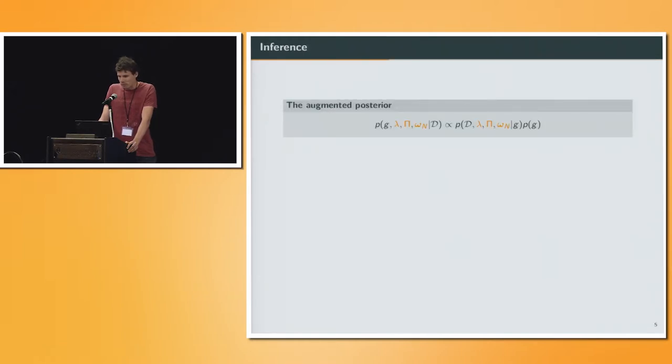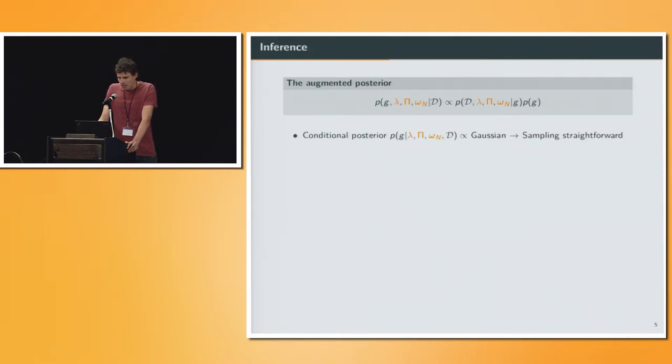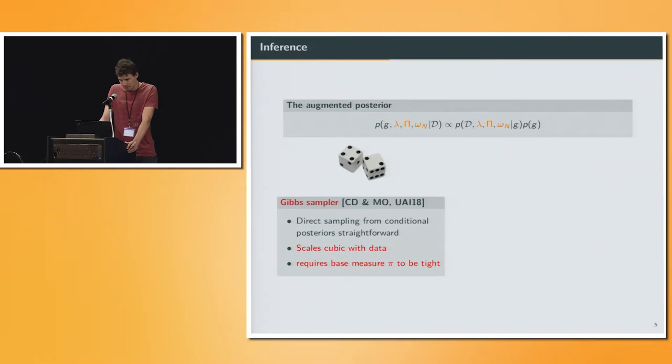Now we have our augmented posterior with our latent function g and our augmented variables here in orange. What we note now is that the conditional posterior of g, given the augmented variables and our data set is Gaussian, and sampling from this model is then straightforward. This holds also true for the conditionals of our augmented latent variables. This makes a very easy Gibbs sampling scheme possible, where we can directly sample from the conditional posteriors, and we don't have any rejections anymore. However, there's still the problem that it scales cubic with data, and it requires this base measure pi to be tight on your data.